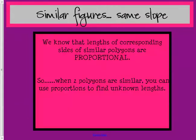Alright, so let's move on to this. We know the lengths of the corresponding sides are similar, and they're proportional. So when they're similar polygons, you can use proportions to find the unknown lengths.